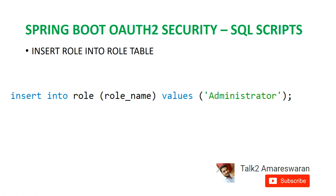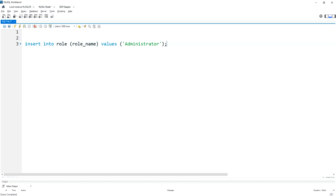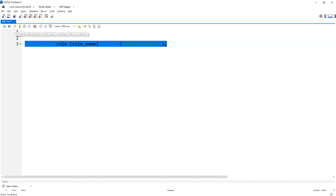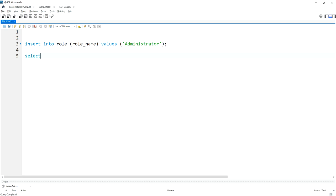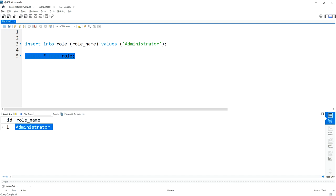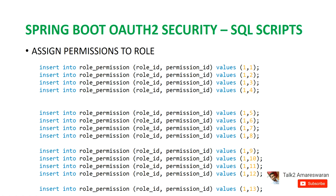Next, I am going to create a role — the administrator role — and assign permissions to the role table. I am inserting a new role called administrator and then I am going to assign those permissions to this role. The role is created successfully. I am going to assign all 13 permissions to this role. The role ID is 1 and the permission IDs start from 1 up to 13.